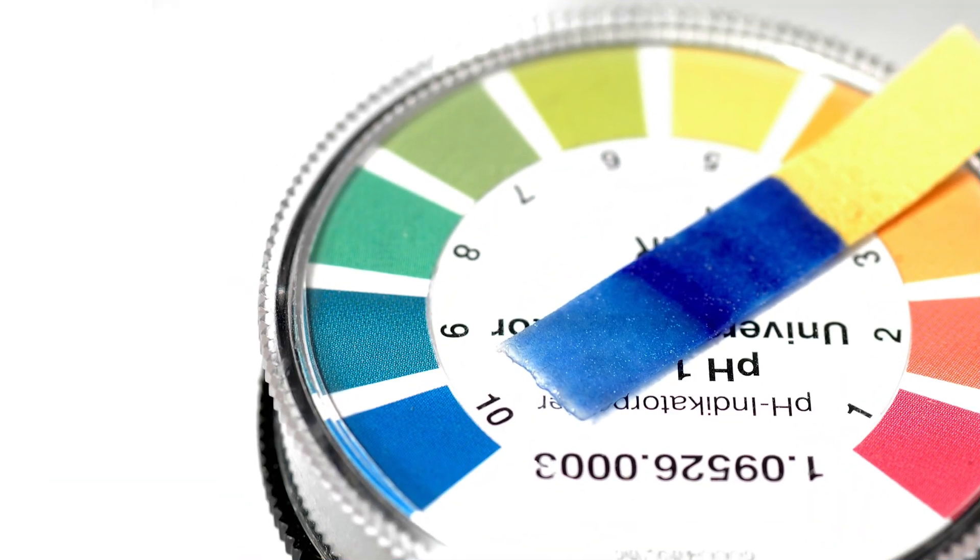Litmus paper is a chemical paper that can be dipped in a solution. When dipped in a solution, it changes color based on whether the solution is an acid or base. The more blue the paper becomes, the higher the pH or more basic the solution is. And the more red the paper turns, the lower the pH or more acidic the solution is.